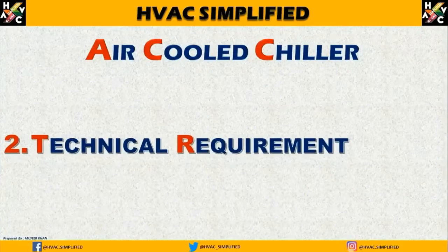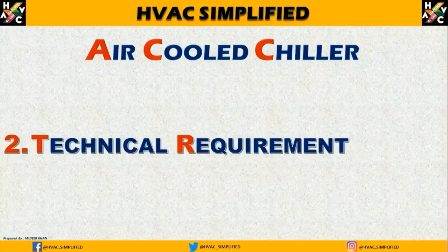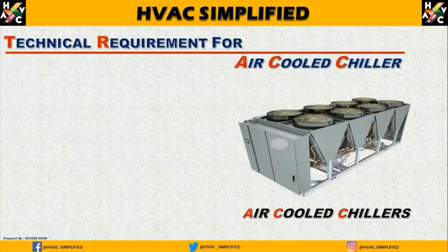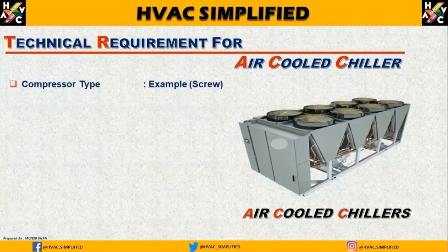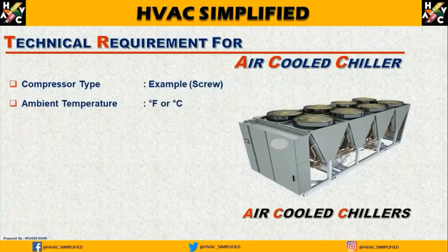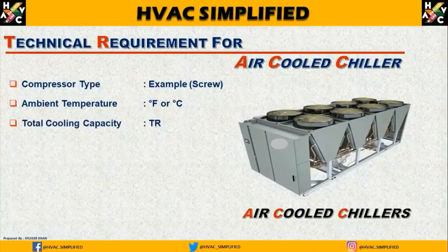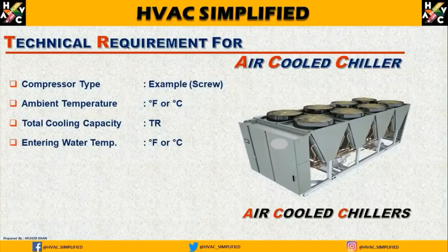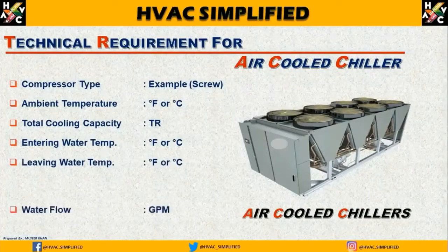Air-cooled chiller technical requirements — अब हम देखते हैं air-cooled chiller के selection के लिए इसकी technical requirement के parameters क्या होते हैं। The first important parameter is compressor type। Next: ambient temperature, total cooling capacity जो tonnage में ली जाती है, entering chilled water temperature, leaving chilled water temperature, water flow GPM — या liters per second, depending on your design, आप किसी भी unit में इसे ले सकते हैं — और power supply। Thank you very much viewers। ये important parameters थे जो air-cooled chiller के selection के लिए essential हैं।